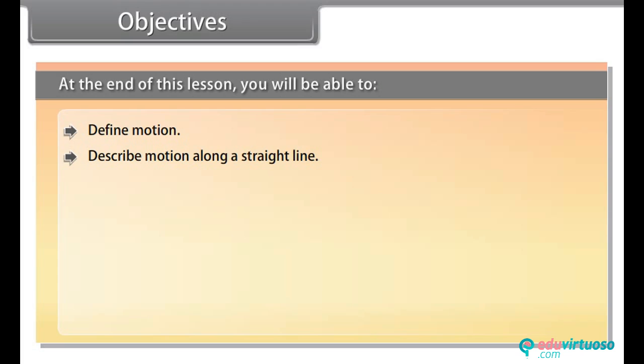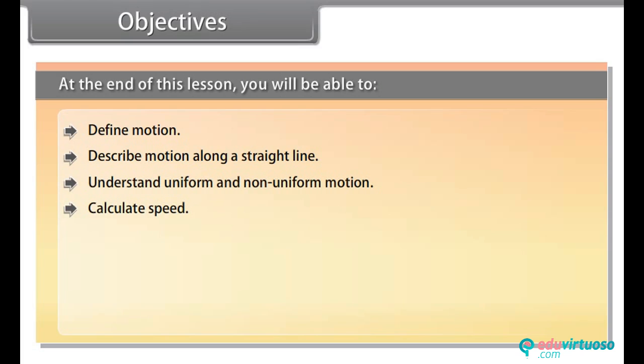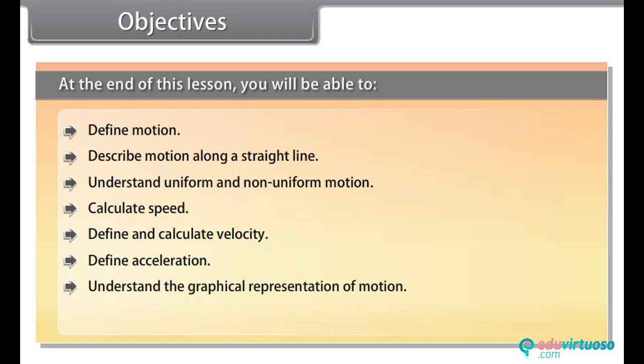Objectives. At the end of this lesson, you will be able to: define motion, describe motion along a straight line, understand uniform and non-uniform motion, calculate speed, define and calculate velocity, define acceleration, understand the graphical representation of motion, and explain uniform circular motion.